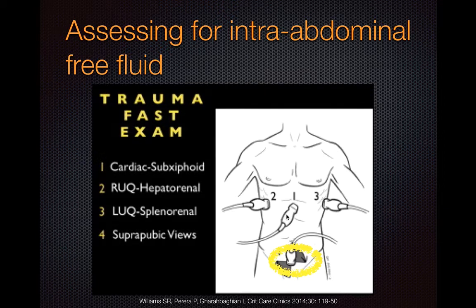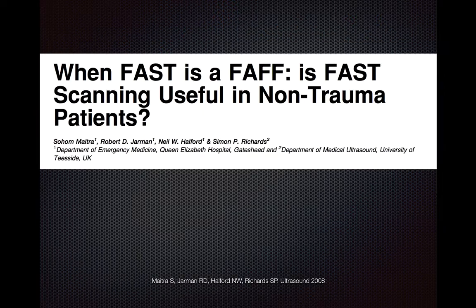For this module I'm not covering the subcostal view, which is primarily there to look for fluid around the heart. Because this module is concentrating on intra-abdominal free fluid, we're only covering three views: the right upper quadrant, left upper quadrant, and the pelvic view. This technique is equally useful for non-trauma patients, and on the medical ward it's not uncommon that we're looking for the presence of ascites using similar techniques.